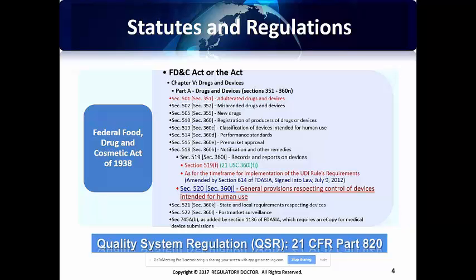Under the Act there are 10 chapters, and I'm showing you Chapter 5. Under Chapter 5 there are various parts, and what you see are the sections on the FFDCA and also corresponding sections on Title 21, United States Code. For example, under FDCA Section 501, which corresponds to Title 21 United States Code Section 351, we have adulterated drugs and devices.